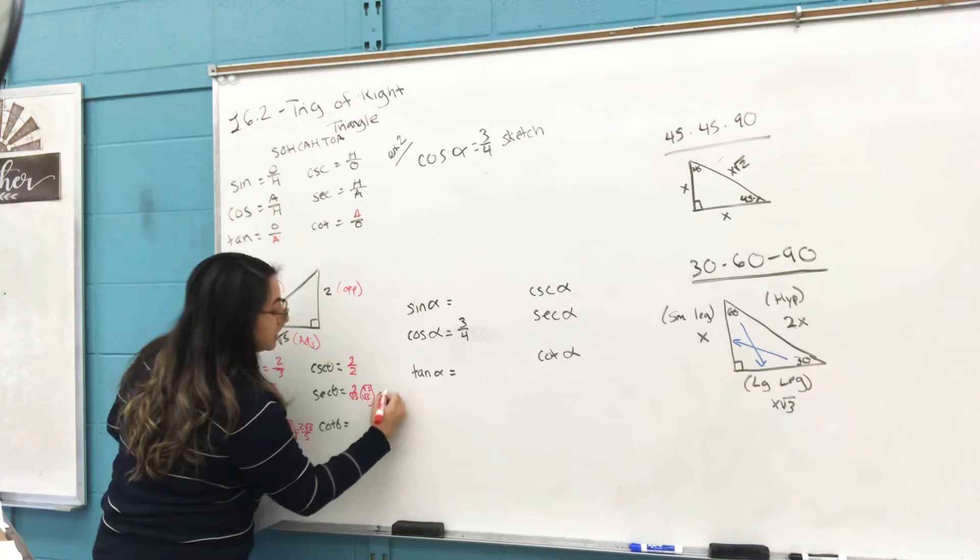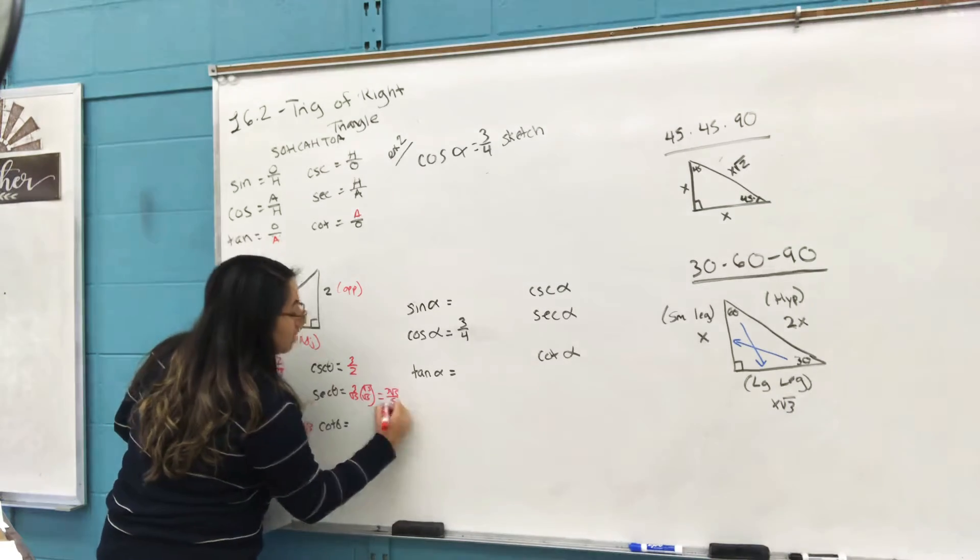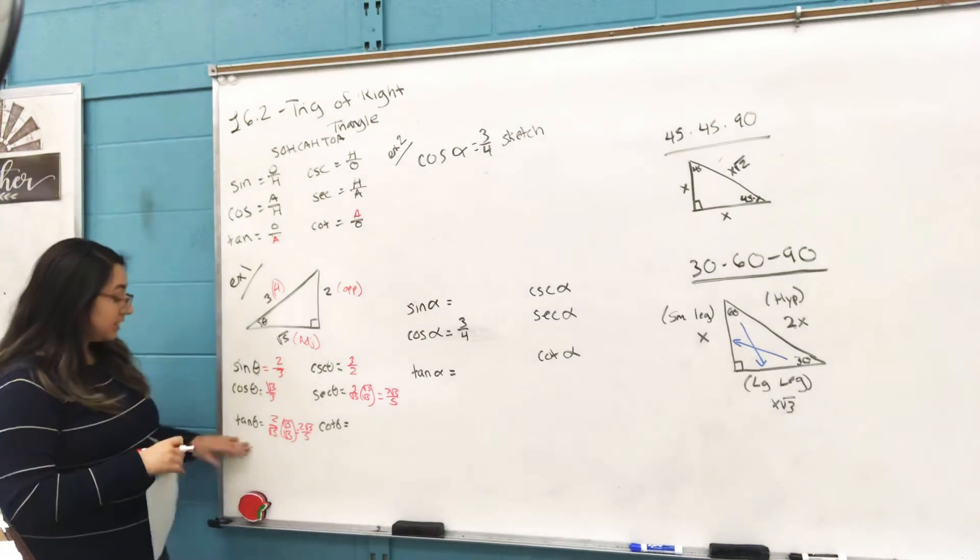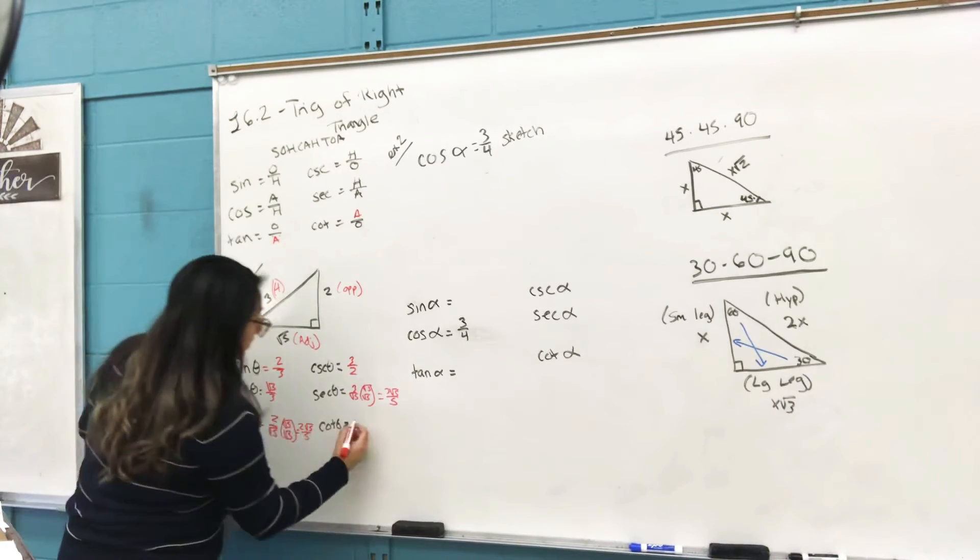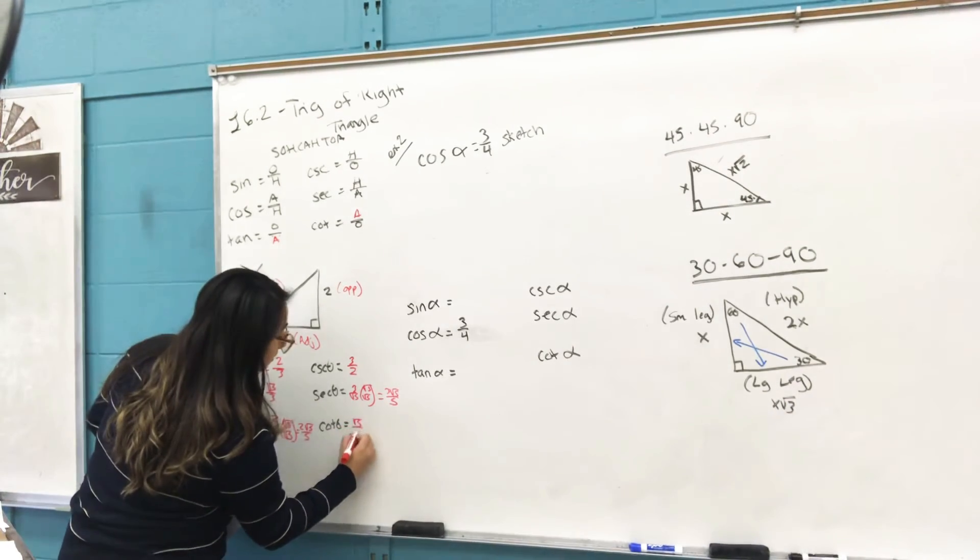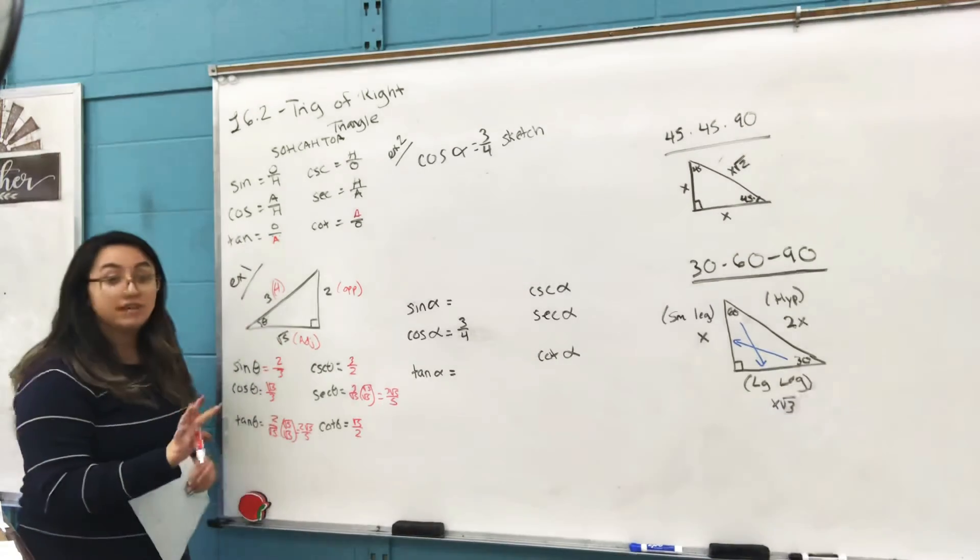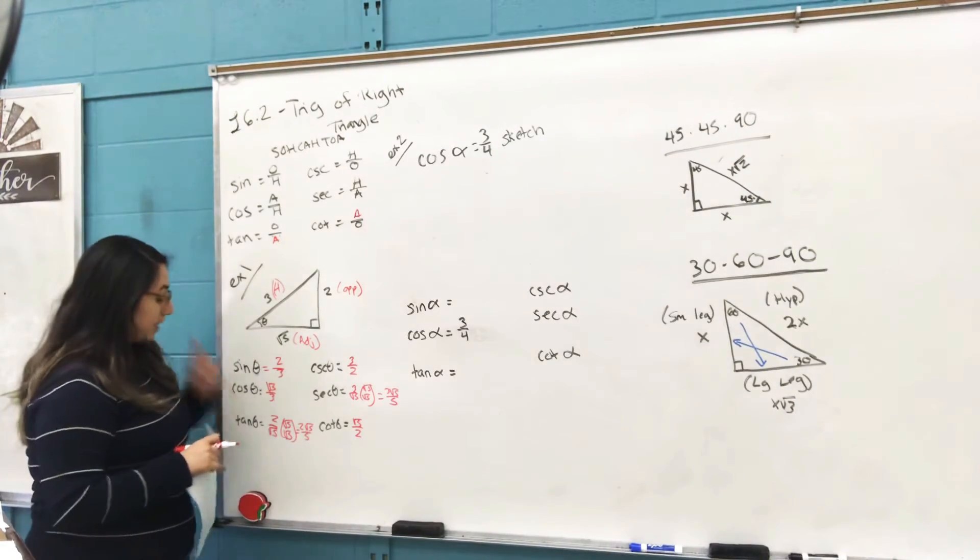Meaning you have to rationalize it; you get 3√5 over 5. Cotangent: tangent is 2 over √5, so that means it's going to be √5 over 2. You don't have to rationalize the denominator there.